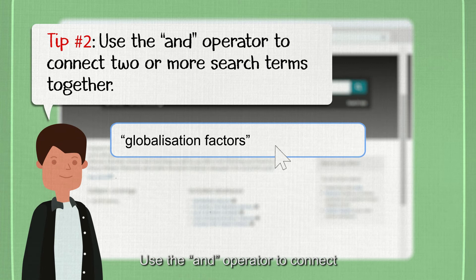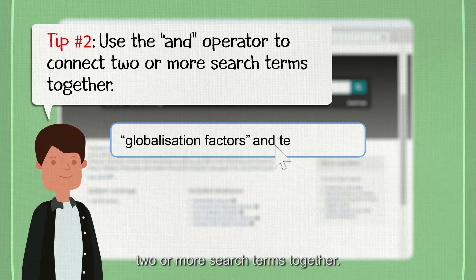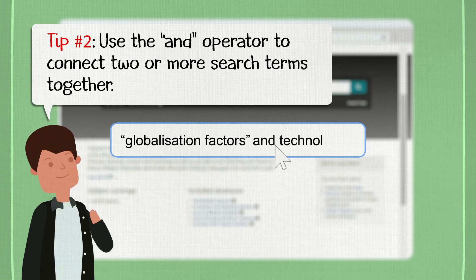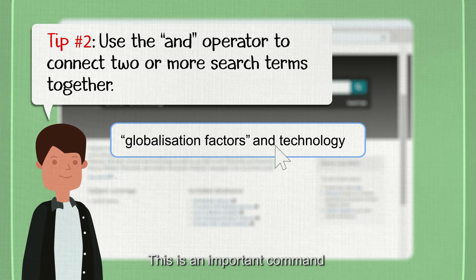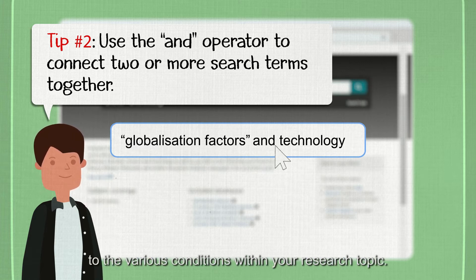Use the AND operator to connect two or more search terms together. This is an important command as you can get search results which are relevant to the various conditions within your research topic.